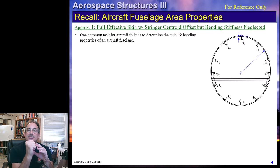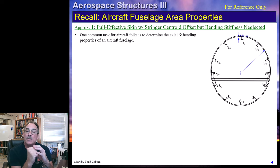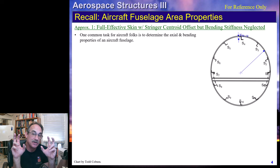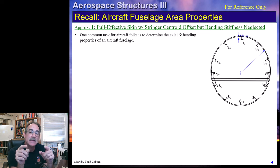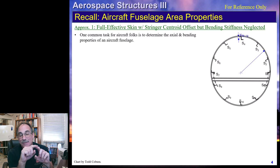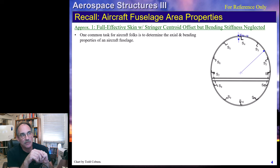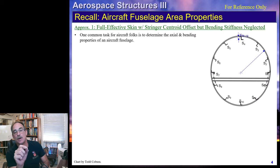We'll look at stringer properties and whether we ignore the stringers' own bending stiffness. We'll also look at accounting for the fact that the centroid of the stringer is not at the skin. Some folks do more accurate analysis by accounting for that stringer offset, which can give slightly better results, but it can introduce hard-to-spot errors in finite element models. I usually recommend just placing stringers as if they're right on the skin—it's simpler and the error is negligible for most models.